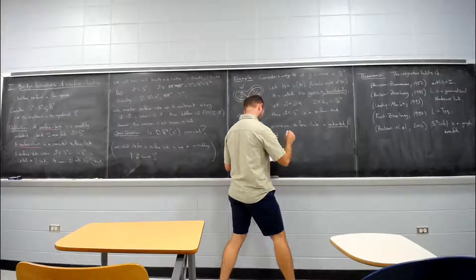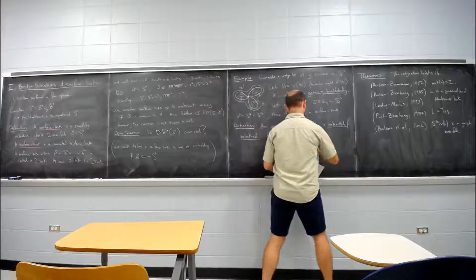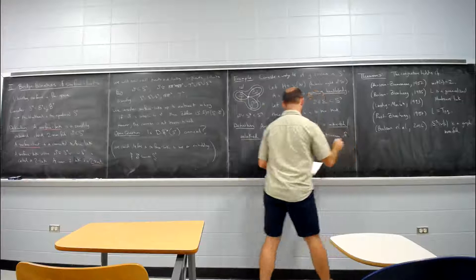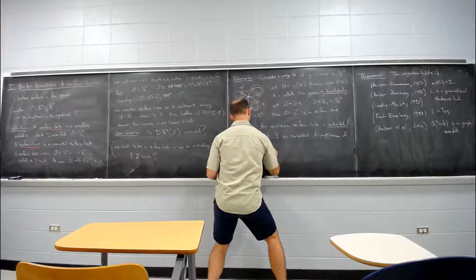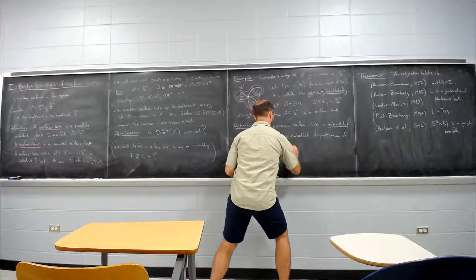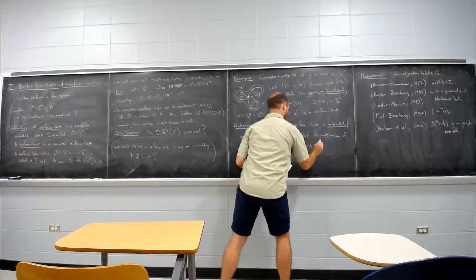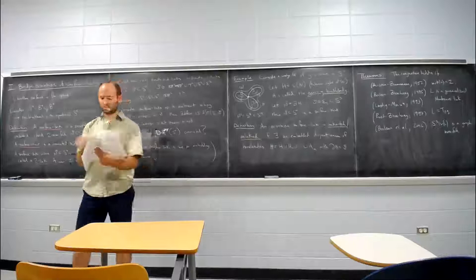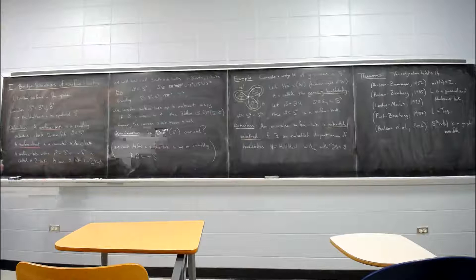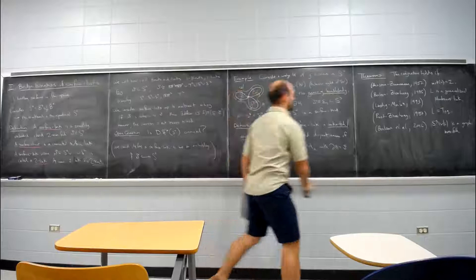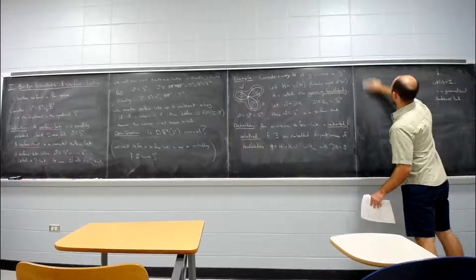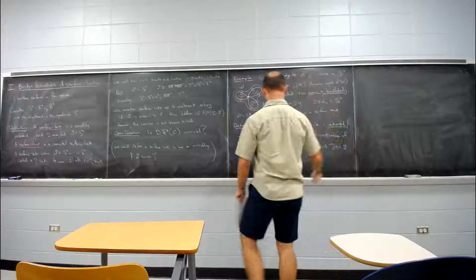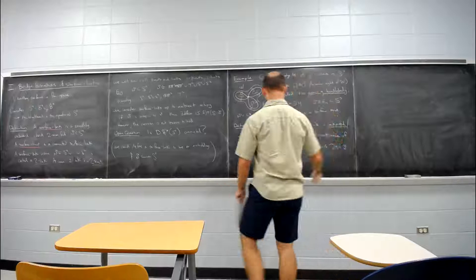An orientable surface link is unknotted. Maybe I should just try to say unlinked. Maybe unlinked in general, unknotted in the connected case. If there exists an embedded disjoint union of H equals H₁ union H₂ union Hₙ with the boundary of H. So what does it mean for a surface link to be unknotted or unlinked? It means that we can find, it means that the surface link bounds a handlebody. An embedded disjoint union of handlebodies, this should be in S⁴.